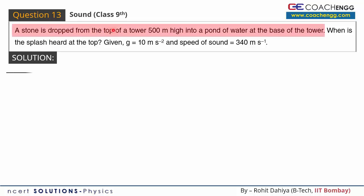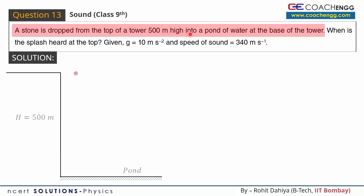A stone is dropped from the top of a tower 500 meters high into a pond of water at the base of the tower. Here I have made a tower — the height is 500 meters, and the bottom of the tower has a pond of water. At the topmost point, a stone is dropped.